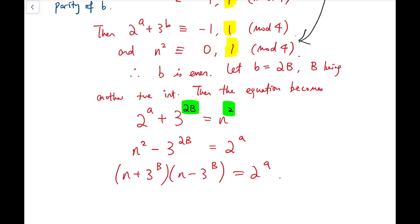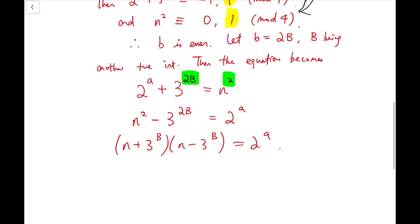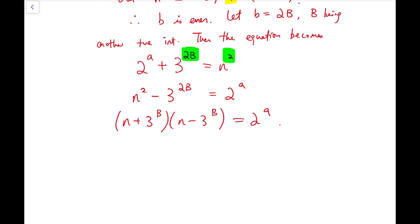And we have two things, two net positive integers multiplied together being equal to the power of 2. Now, from this, we can tell